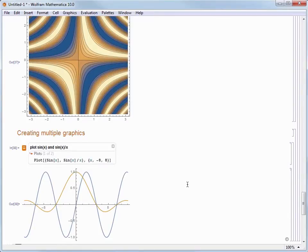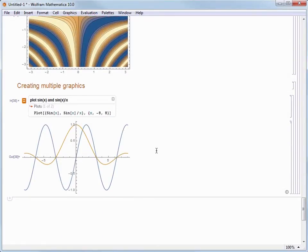We can see that by default, Mathematica colors the plots differently so that we can tell them apart, but we can go even further by using an option to tell Mathematica to make a legend for us.